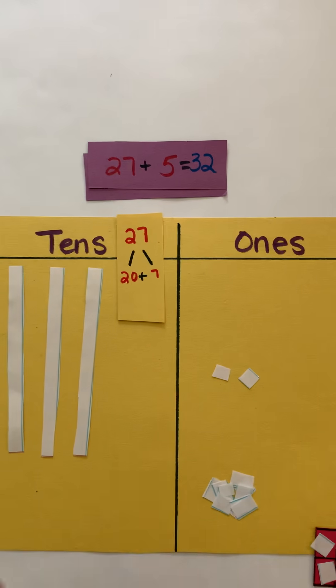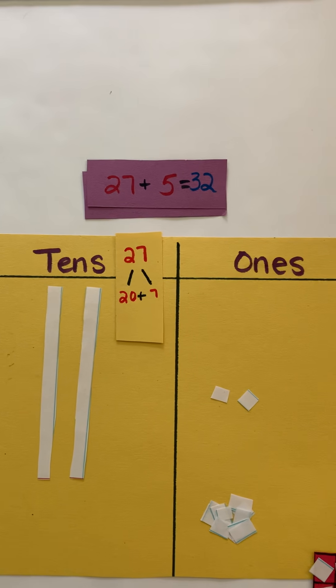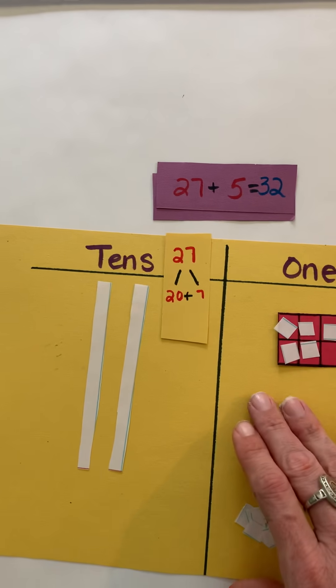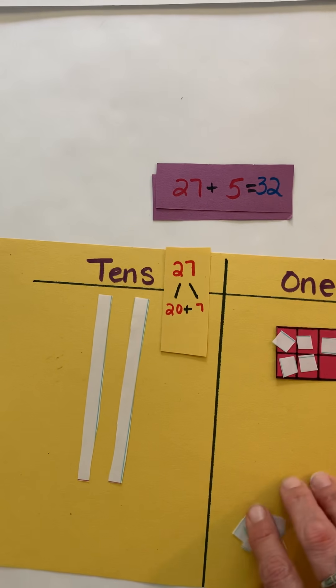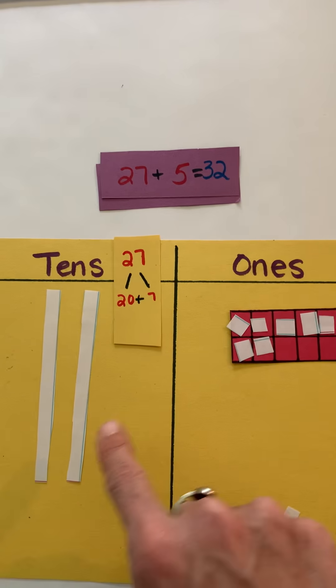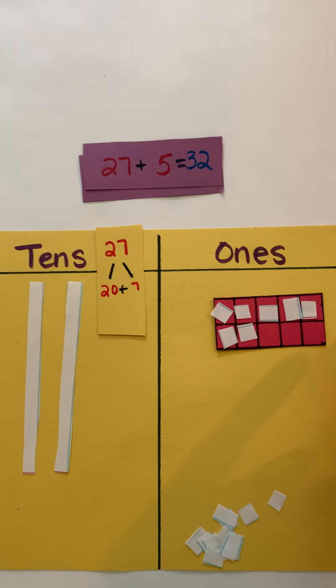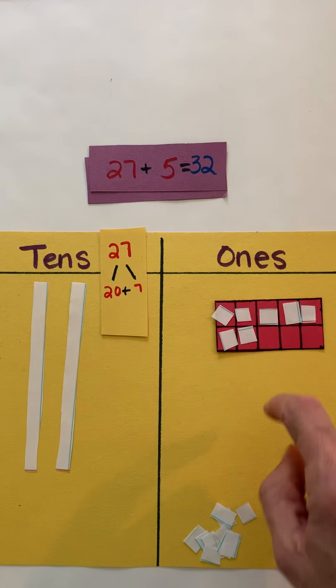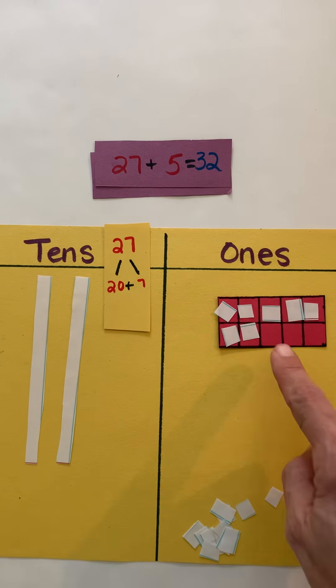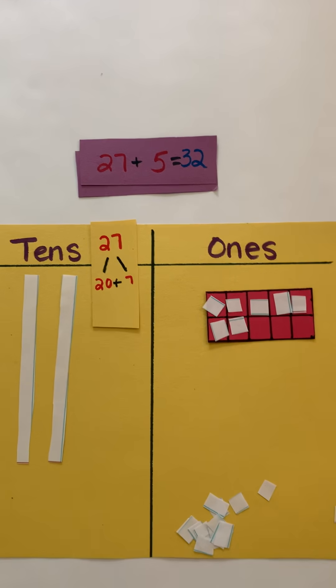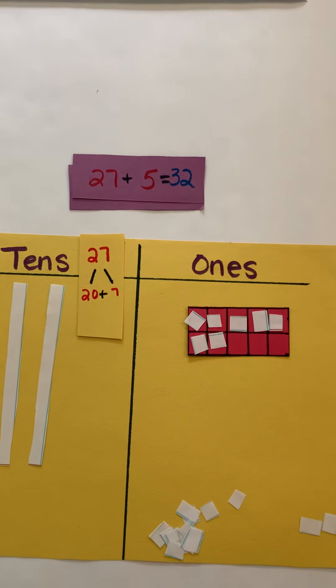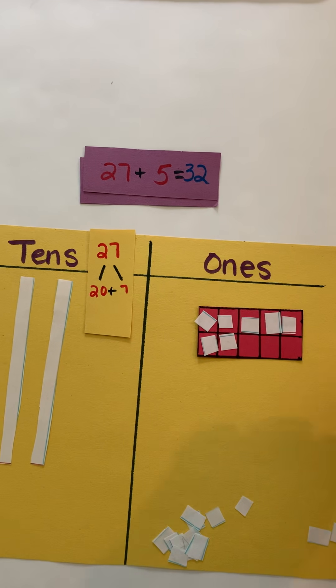Now another way that you can look at this is using a 10 frame to kind of help keep it organized. You can see that I have 27 again, knowing that this is 5, 6, 7. Students should be able to look at that and know 5, and then that's 5 and 2 more is 7. I'm 3 away from 10 if you wanted to ask some different questions. So I've got 27 represented and I'm going to add 5 ones.